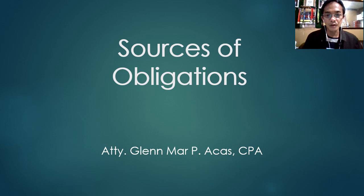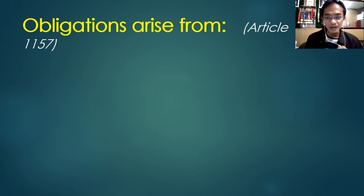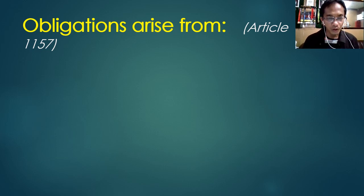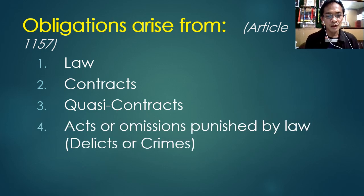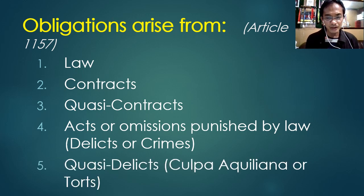We are now on the topic of sources of obligations. Article 1157 of the Civil Code provides that obligations arise from or may come from either law, contracts, quasi-contracts, delicts — also called crimes or acts or omissions punished by law — and quasi-delicts, also called culpa aquiliana or torts. Under Article 1157, these are the five sources of obligations.